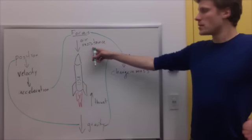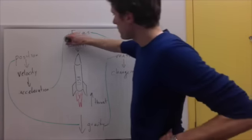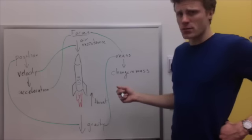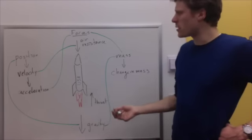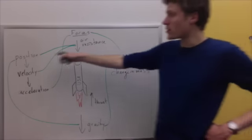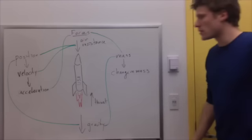Air resistance depends upon how fast the rocket is going. It also probably depends upon the altitude of the rocket. The higher it goes, the lower the pressure, so probably lower air resistance. So there's also a relationship between the air resistance and the position of the rocket.